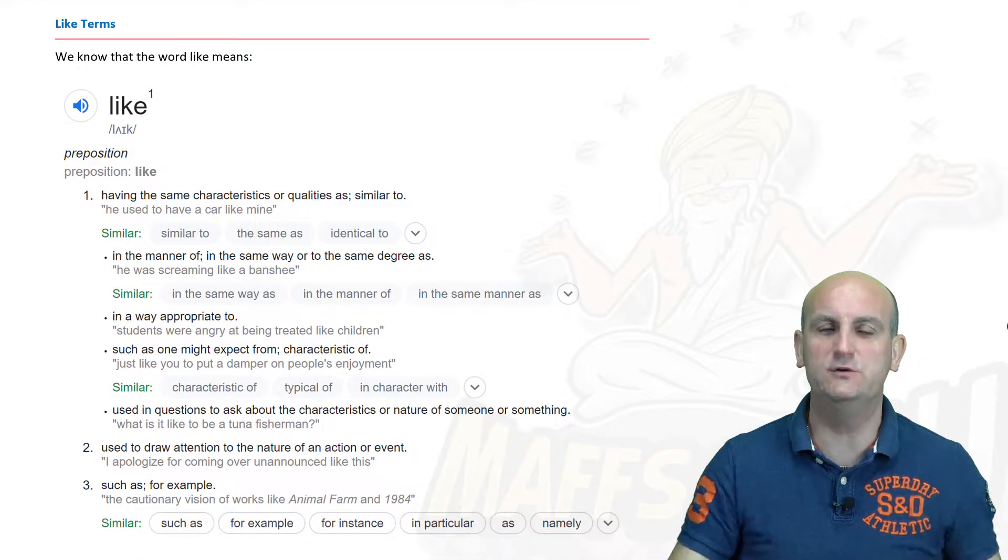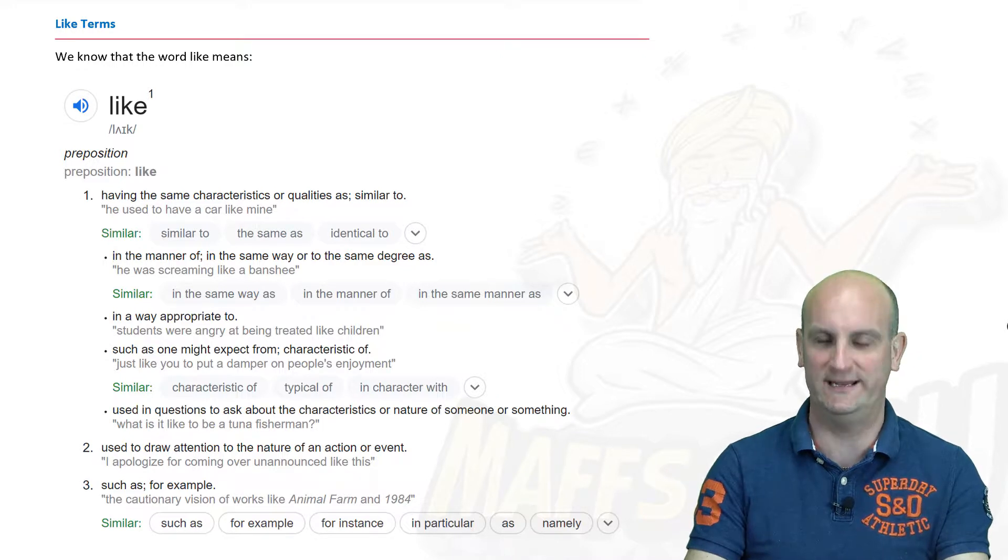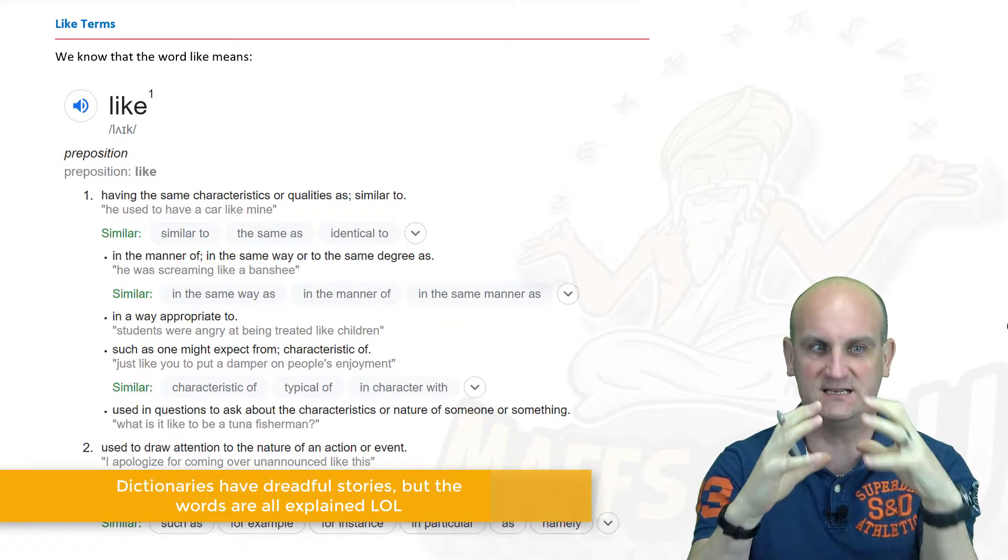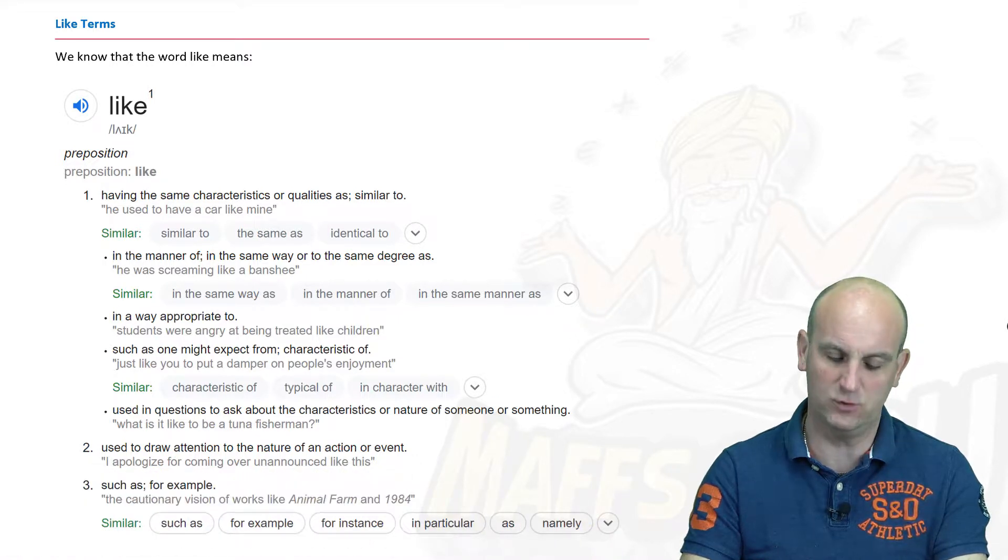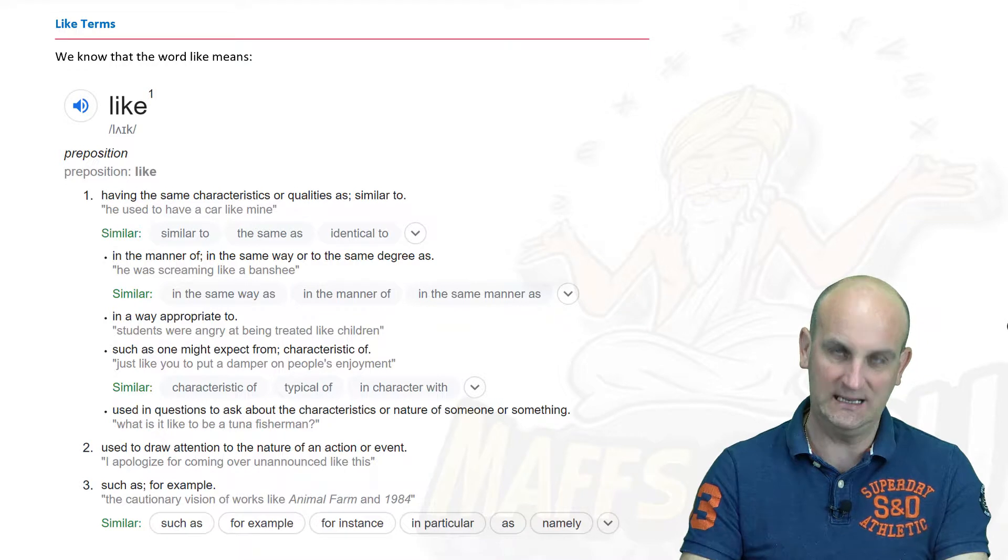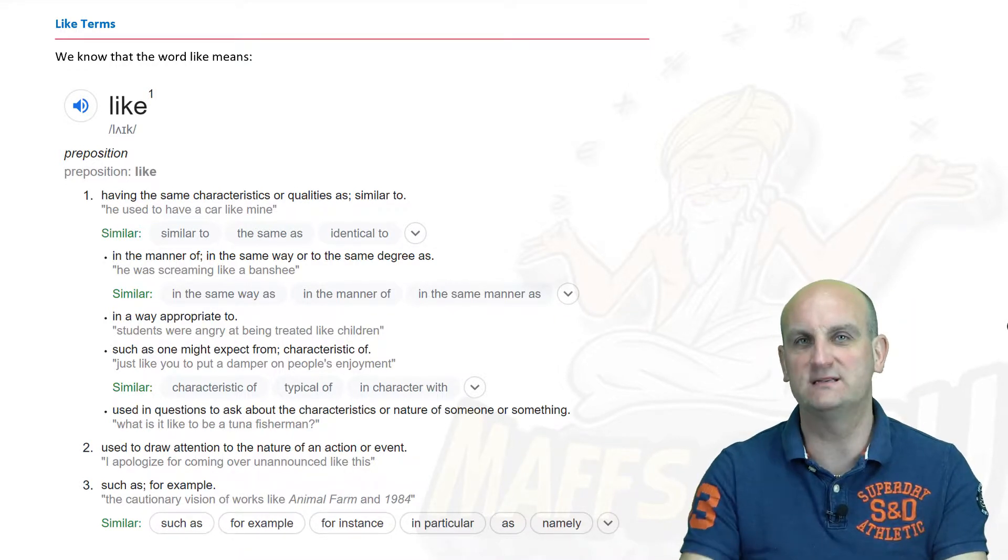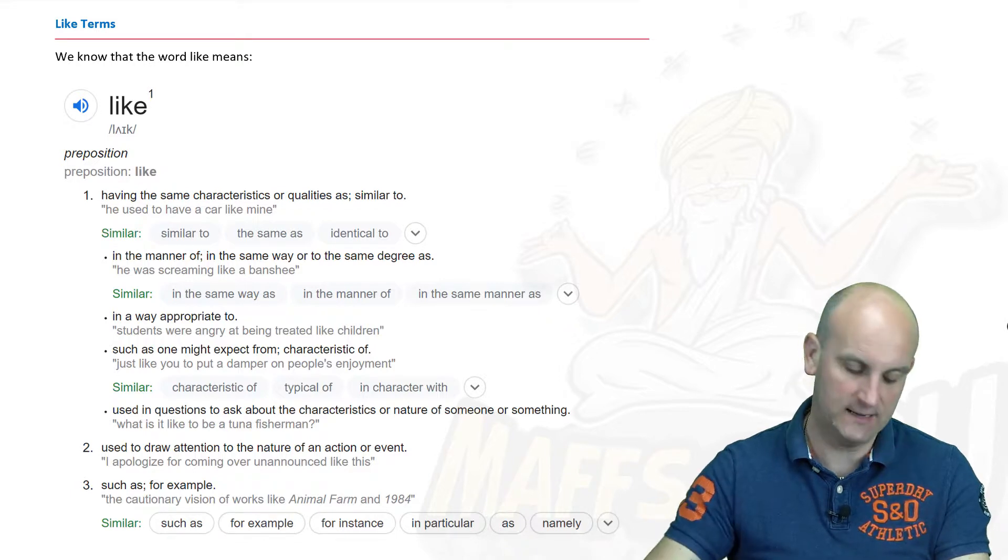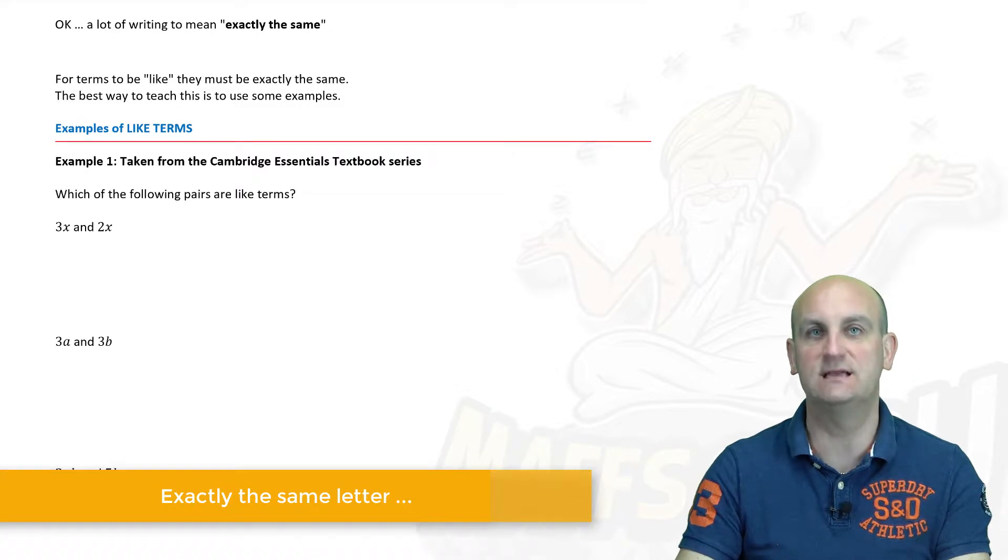I love the dictionary. My mum made me use it all the time. So if I don't know what something is I look it up. I Google it. I know we didn't have Google there. We had these massive dictionary things. So what does like mean? Having the same characteristics or qualities as similar to. Now in maths when it says having the same characteristics we just want that to say exactly the same. So like terms in maths have to be exactly the same.